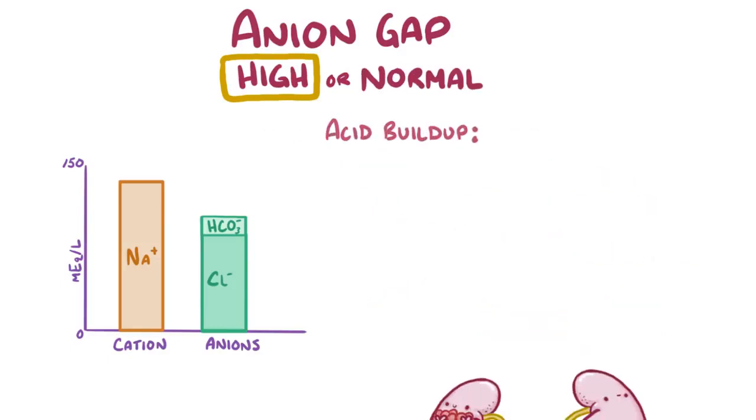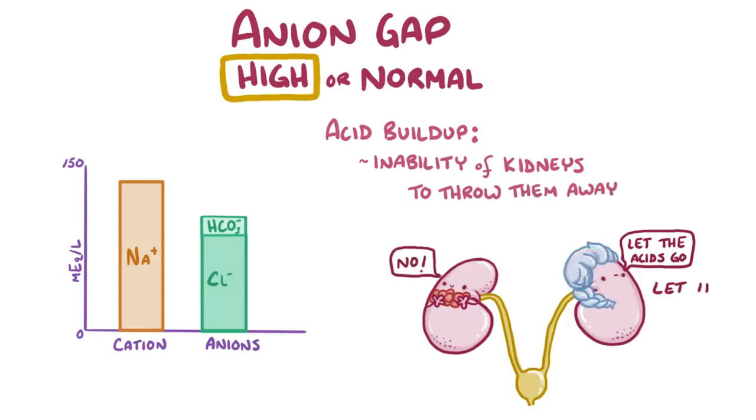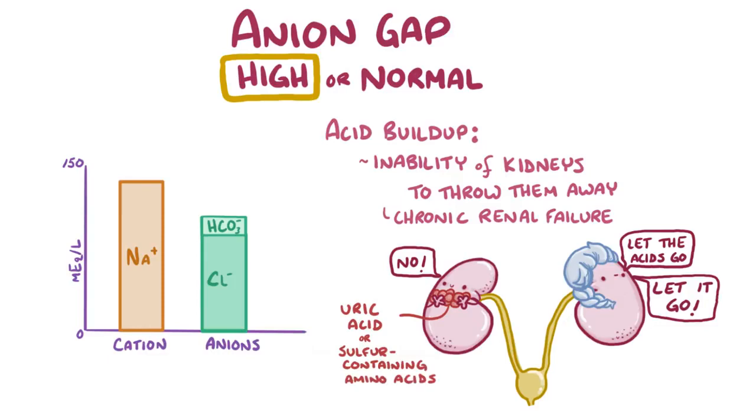Another way acids can build up in our blood is due to an inability of the kidneys to throw them away, even though they're produced in normal amounts. This can happen in cases of chronic renal failure, in which organic acids like uric acid or sulfur-containing amino acids can accumulate because they aren't excreted normally.